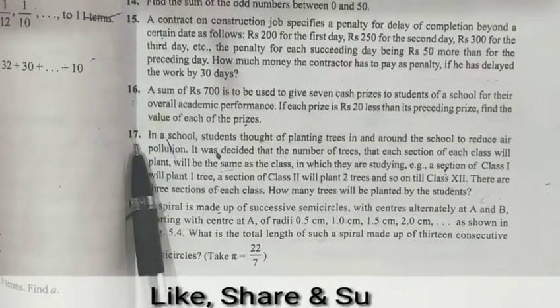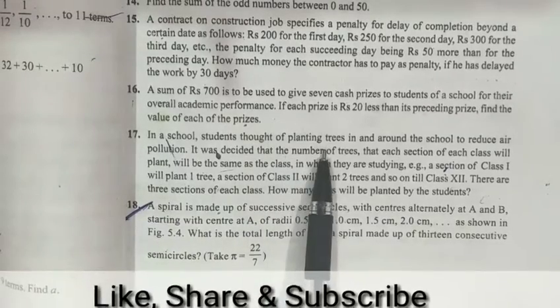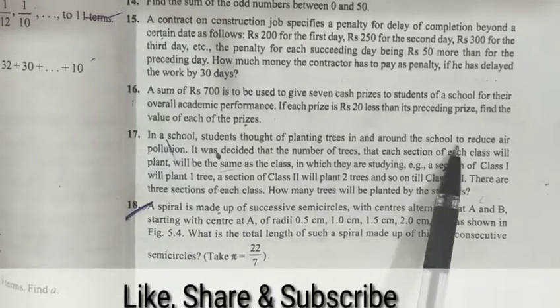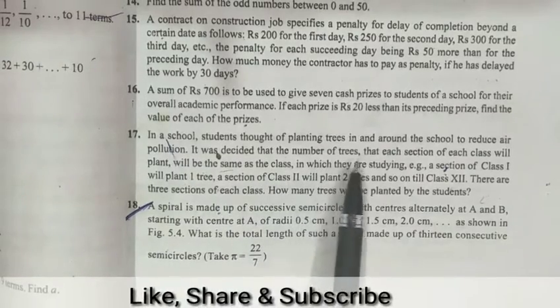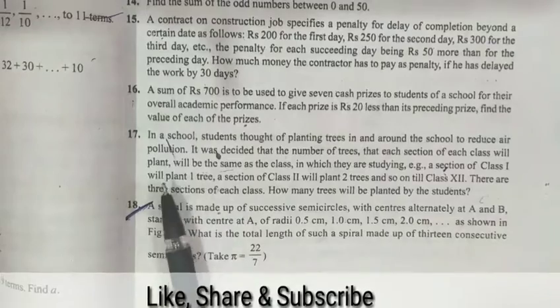Class 10, Exercise 5.3, Question number 17. In a school, students thought of planting trees in and around the school to reduce air pollution. It was decided that the number of trees that each section of each class will plant will be the same as the class in which they are studying.